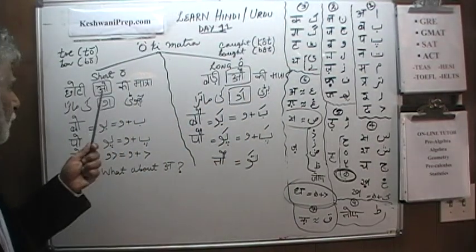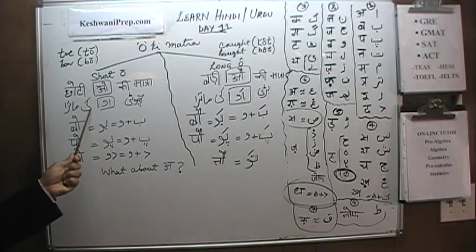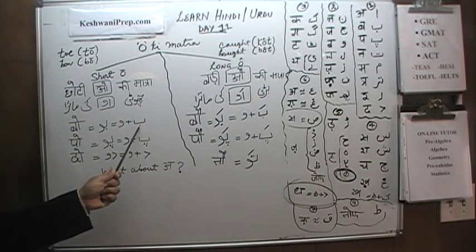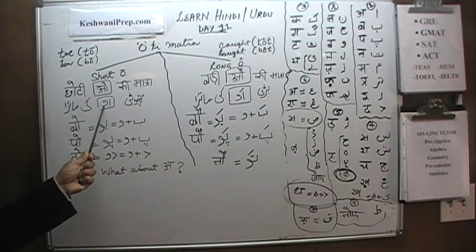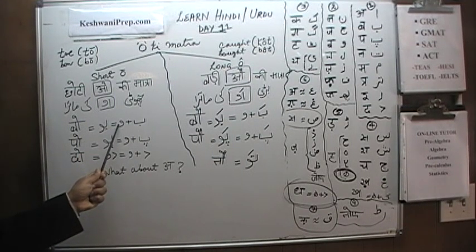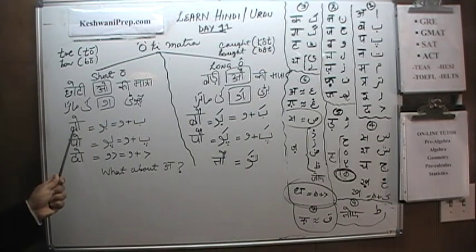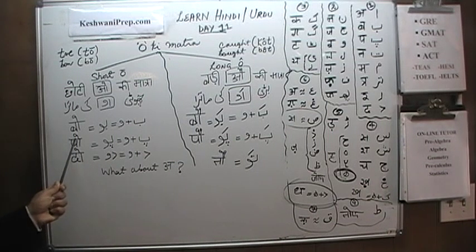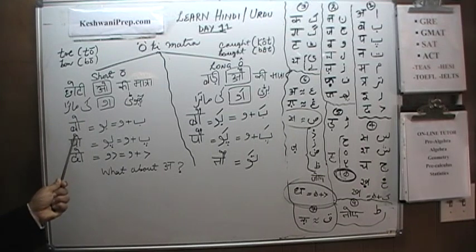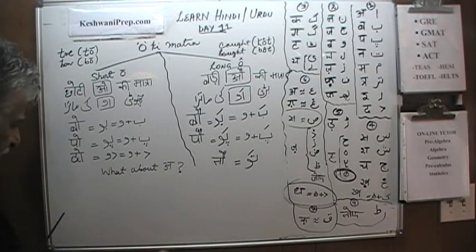For Chhoti Oki Matra in Urdu, we take the letter Ba and add Wow to it, and it becomes Bo. In Hindi, you draw a line next to the letter and put the symbol on top. Similarly, for Po: add a Wow and it becomes Po. In Hindi, we draw one line like Aki Matra and then draw the symbol on top, and it becomes Po.